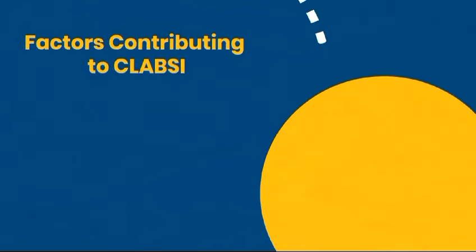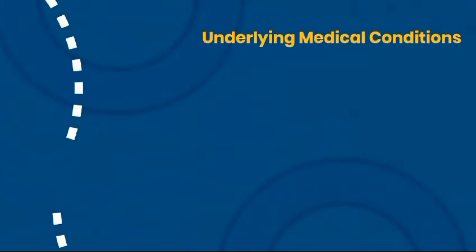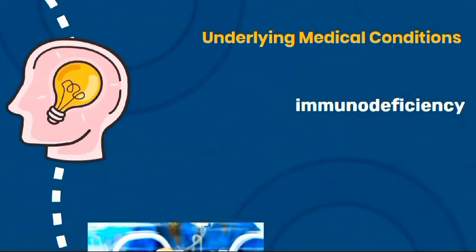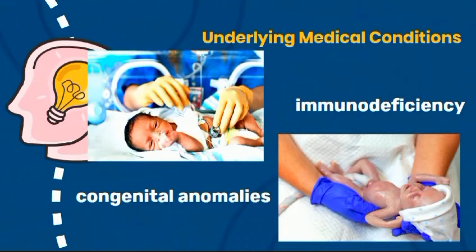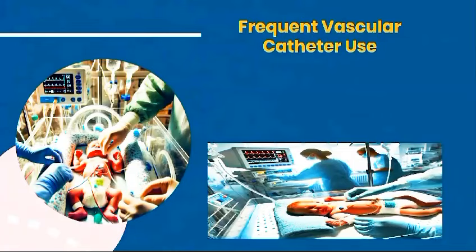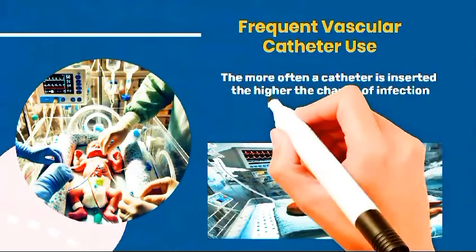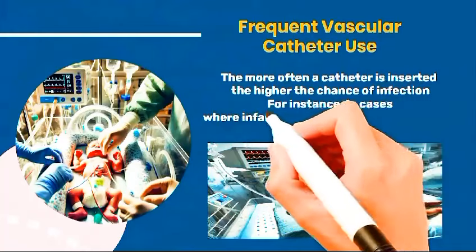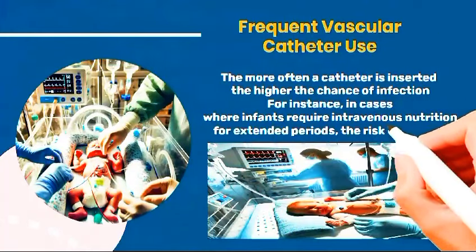The factors influencing central line-associated bloodstream infection include: 1. Underlying medical conditions — conditions such as immunodeficiency and congenital anomalies require advanced medical care, increasing infection risk. 2. Frequent vascular catheter use — the more often a catheter is inserted, the higher the chance of infection. For instance, in cases where infants require intravenous nutrition for extended periods, the risk escalates.